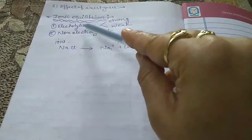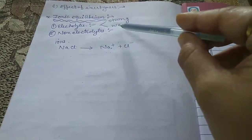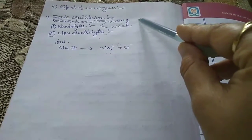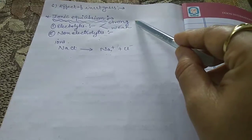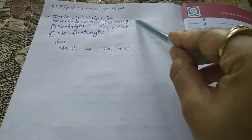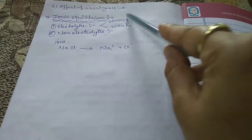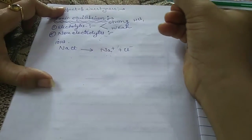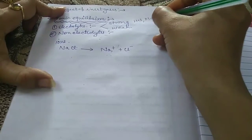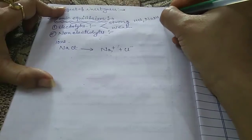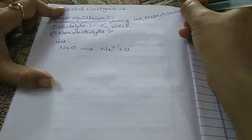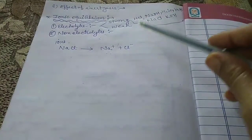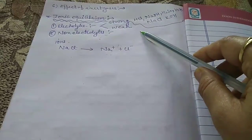Depending on the extent of ionization, electrolytes are divided into two categories: strong electrolytes and weak electrolytes. Substances which ionize completely into ions in aqueous solution are called strong electrolytes. Examples include HCl, NaOH, H2SO4, HNO3, NaCl, and KOH, all of which ionize completely in their aqueous solution.